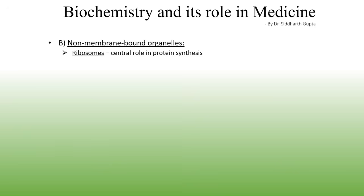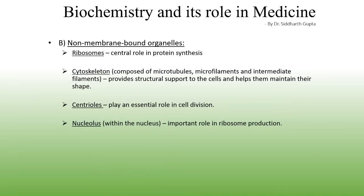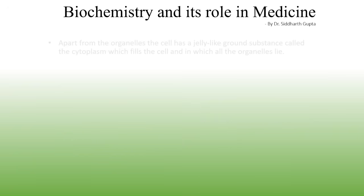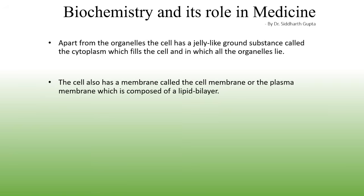Now let's move on to the non-membrane-bound organelles. The ribosomes have a central role in protein synthesis. The cytoskeleton is composed of microtubules, microfilaments and intermediate filaments — different kinds of fibers — and provides structural support to the cell, helping it maintain its shape. The centrioles play an essential role in cell division. The nucleolus lies within the nucleus and has an important role in ribosome production. The proteasomes degrade damaged and regulatory proteins. Apart from organelles, the cell has a jelly-like ground substance called the cytoplasm, and a surrounding cell membrane or plasma membrane composed of a lipid bilayer.